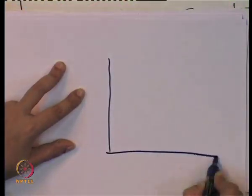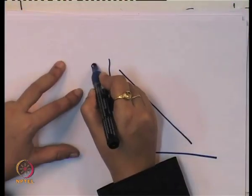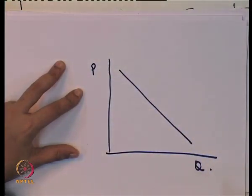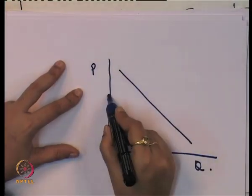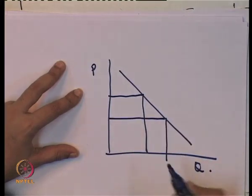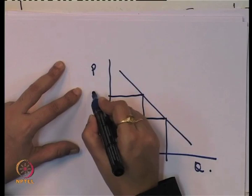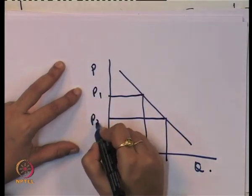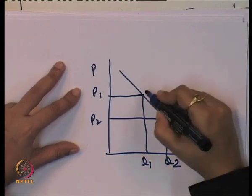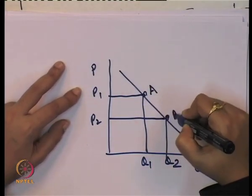Taking a linear demand curve, where price is on the Y-axis and quantity demanded is on the X-axis. Each point of the demand curve gives us a different price-quantity combination. So we have P1, P2, Q1, Q2 — with point A and point B on the curve.